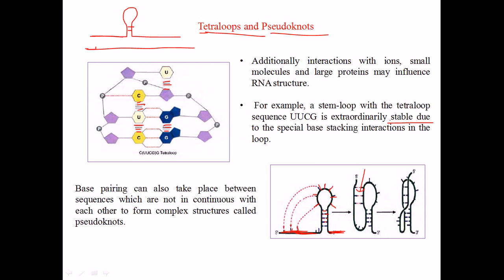So we are having the tetraloop structures and the pseudoknots. Now this kind of structure is pretty unusual, and most of the time we cannot easily see this. But these kinds of structures are important to make the RNA structure stable, and not only to make the RNA structure stable — the presence of this kind of structure actually flags the RNA with some properties. They actually call proteins that come and bind to the RNA because it is having this kind of regions. So the RNA actually acts as the flagging instruction points.